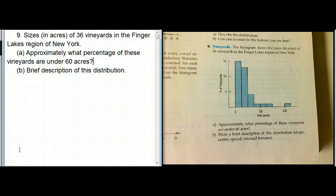Here's a problem from Chapter 4 of Bach, Bellman, DeVoe, displaying quantitative data. Here we've got a histogram showing the sizes in acres of 36 vineyards in the Finger Lakes region of New York.